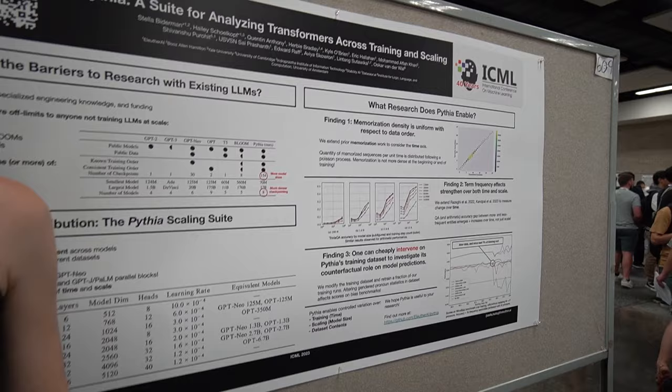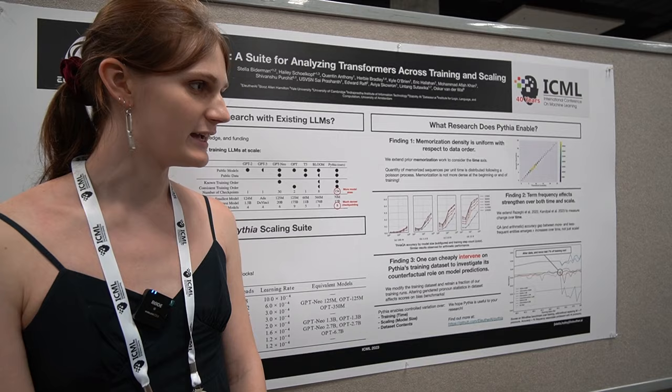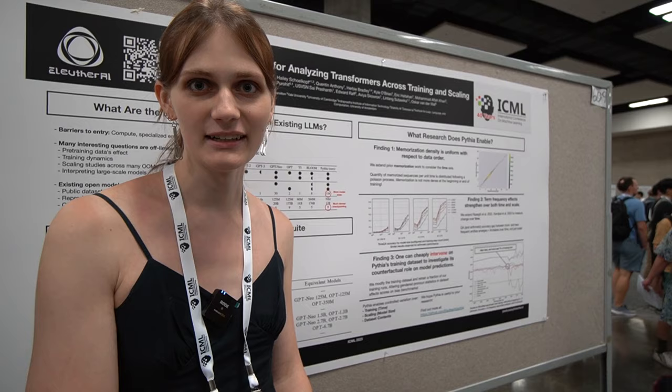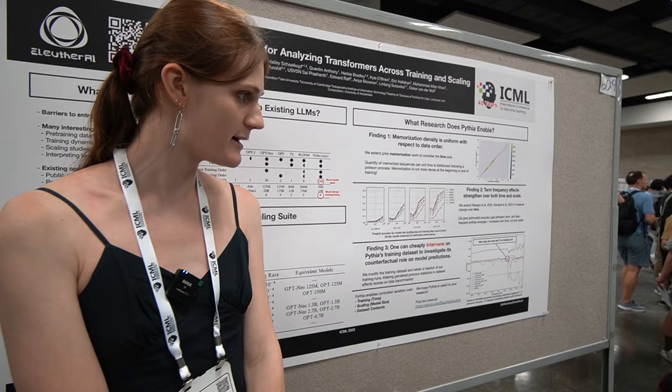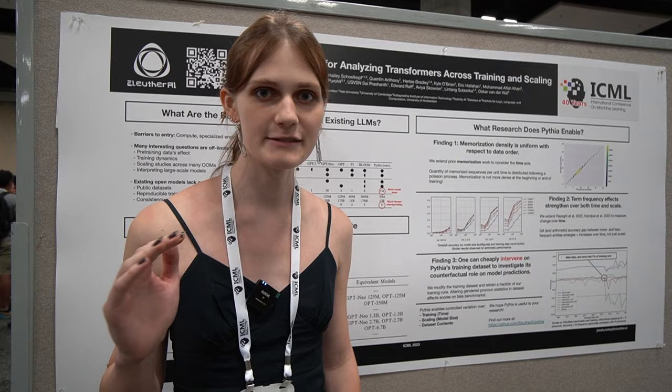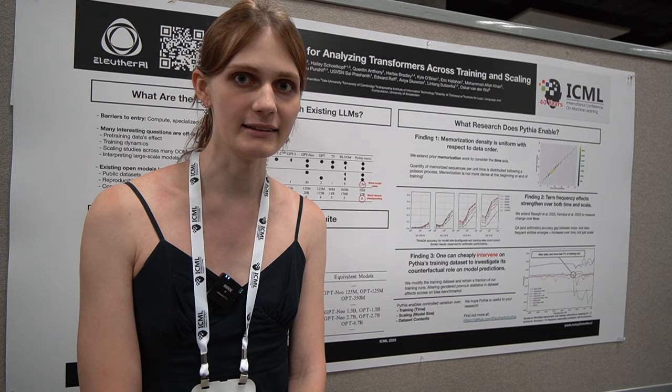Our case studies look at things that people have investigated in the literature, but extend them to the time axis to get additional insight. The first thing we look at is that people often look at models' tendency to repeat text verbatim, called memorization, and they ask questions like: what percentage of the training dataset was memorized? The answer is about 2%, maybe 4% for a model double the size. The question that hasn't been asked yet is: if we see a data point in the last 5% of training, is that more likely to be memorized than a data point in the first 5% of training?